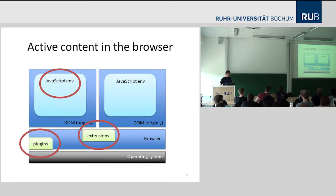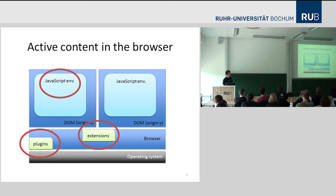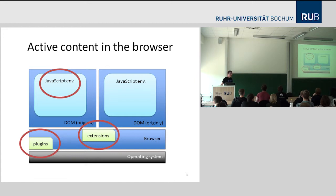So what I'm going to talk about first is active content in the browser. I'm going to take a step back from JavaScript sandboxing and talk about active content at large. When you think of a browser, I'm not going to go into details like same-origin policy since I'm sure you've been beaten to death with those concepts. You have the operating system, the browser on top, different origins with the DOM and JavaScript engine. When we talk about active content, there are three parts: plugins, extensions, and the JavaScript environment itself.